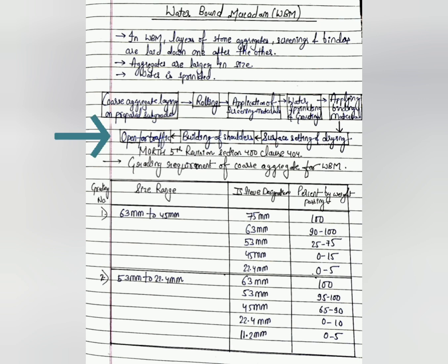The grading requirement for coarse aggregate for WBM is as per MoRT&H fifth revision, Section 400, Clause 404. There are two types of grading: Grading 1 size range is 63 mm to 45 mm, and Grading 2 is 53 mm to 22.4 mm. IS designations and percentage by weight passing are specified, and test results must lie within the IS limit range for both gradings.